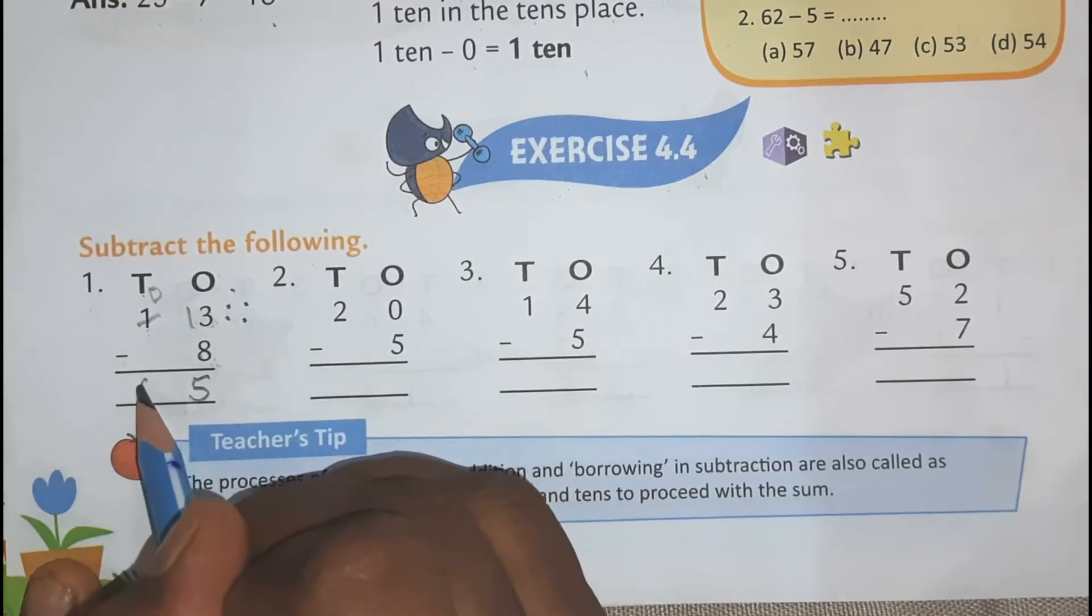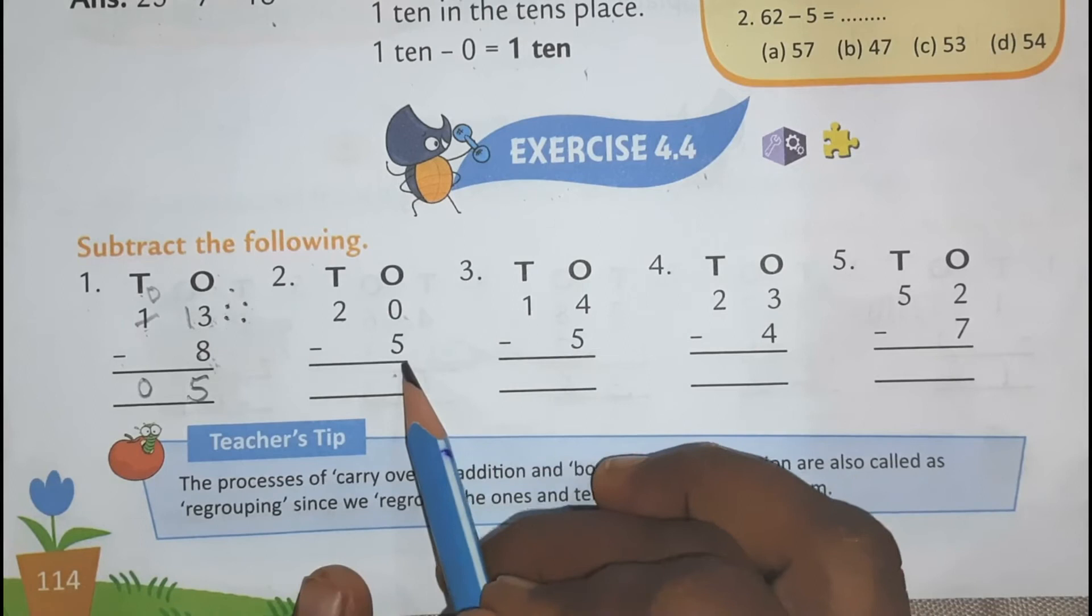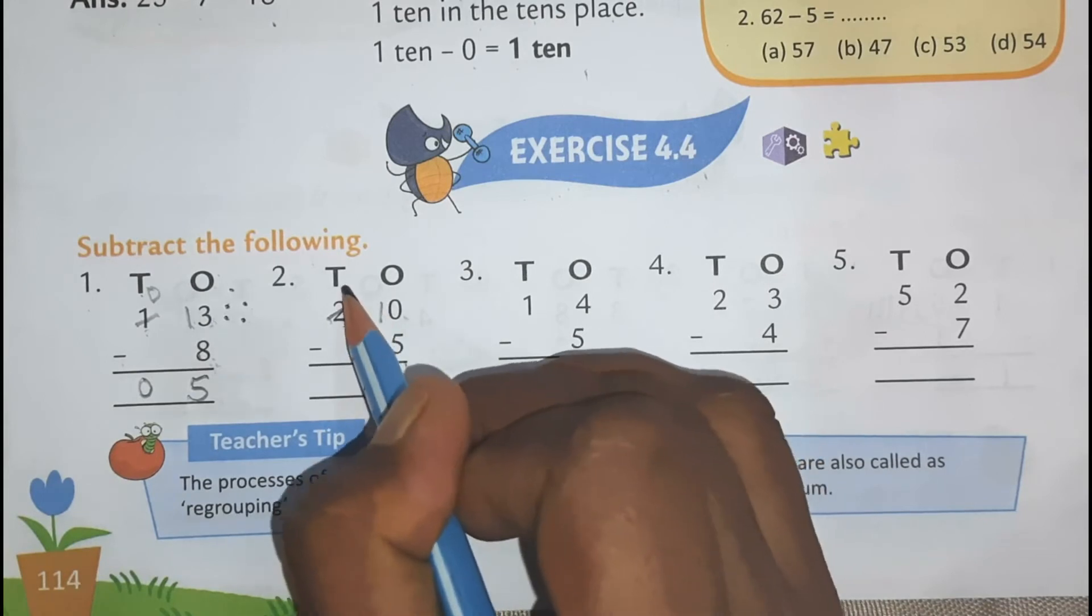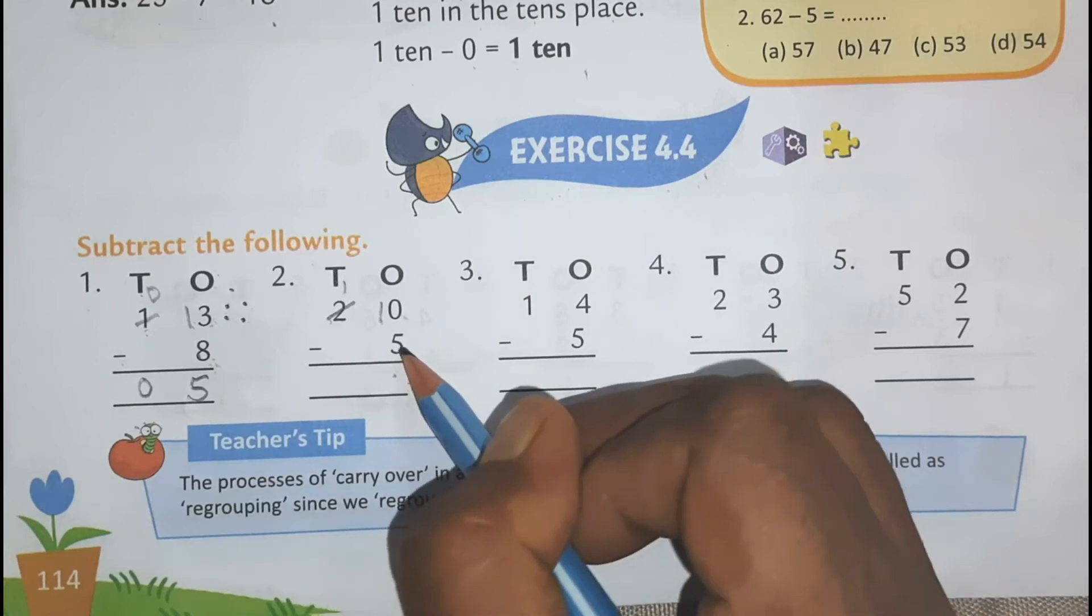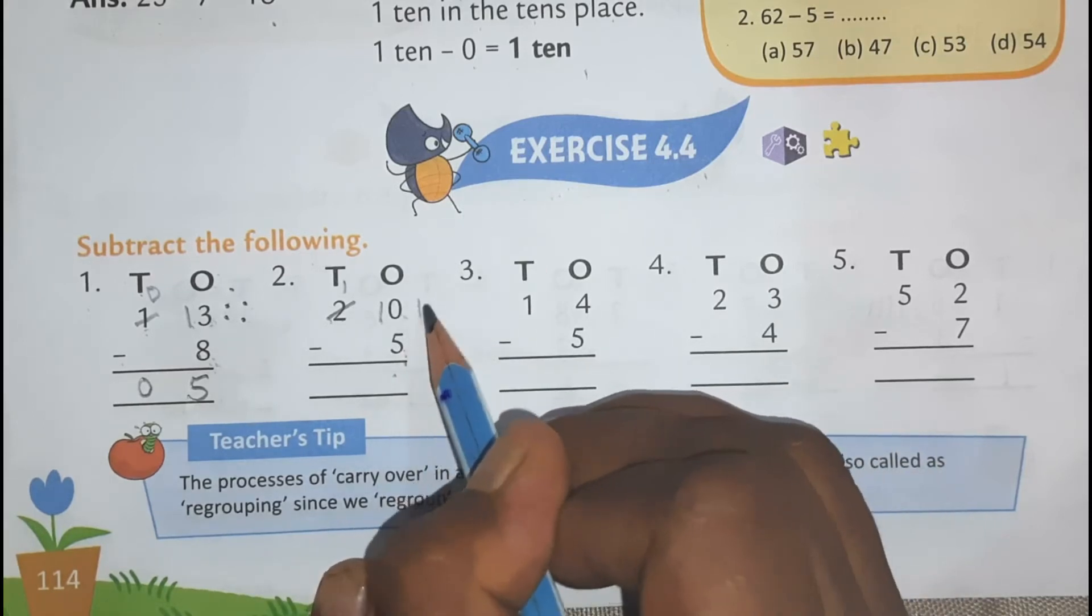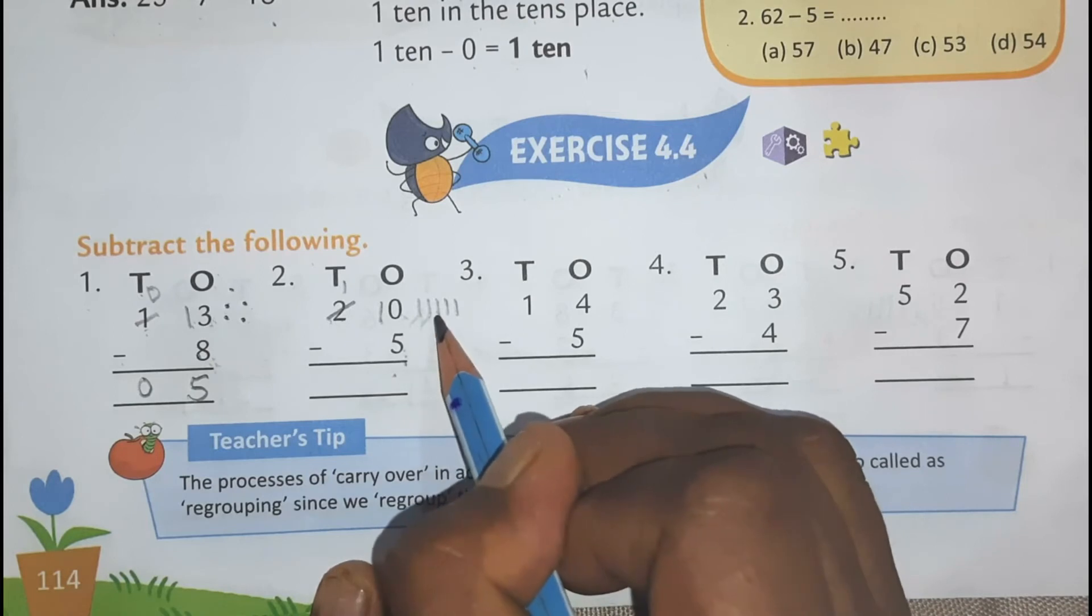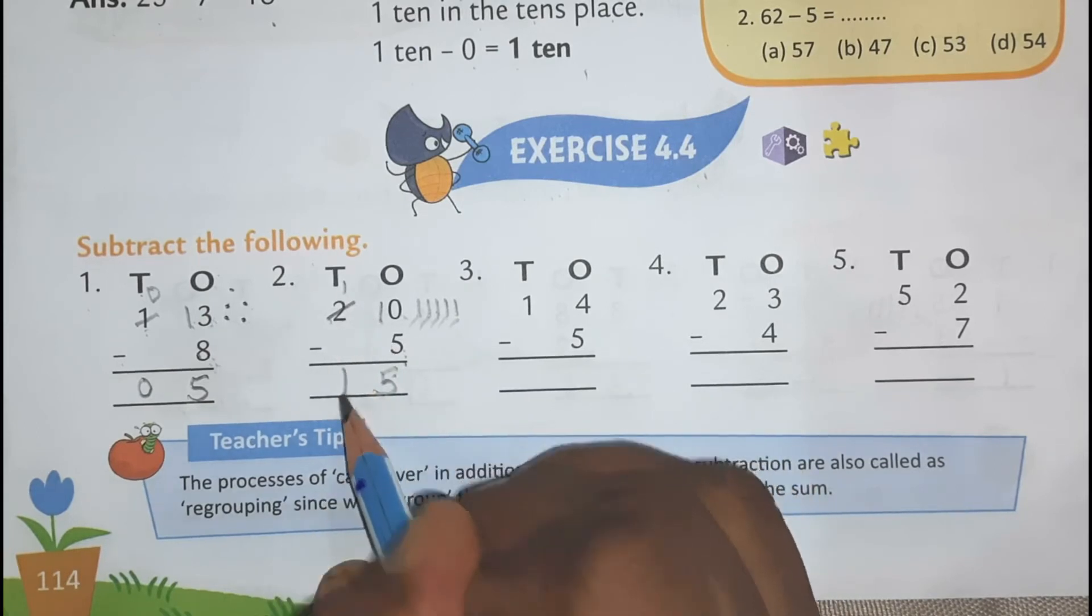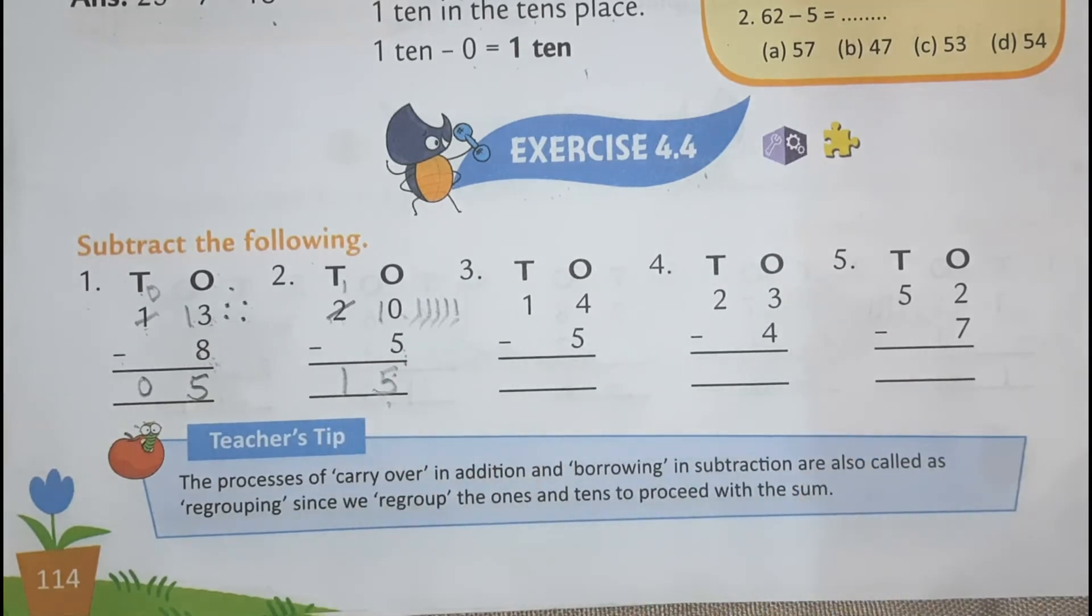So you have to borrow. So 2 minus 1 will become 1 and this 10 will become 10. So 10 minus 5. So you can also do this sum by forward counting 5, 6, 7, 8, 9, 10. So how many lines are there? 1, 2, 3, 4, 5. So you can write here 5. Then 1 minus 0, 1. So 20 minus 5 is 15. So in this way children you can solve exercise 4.4.